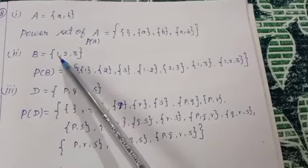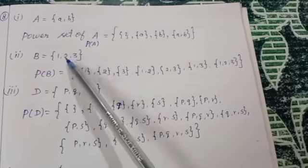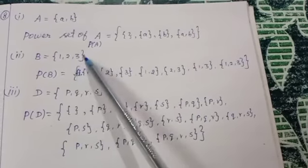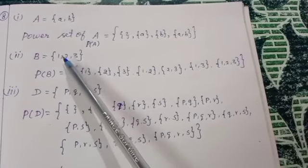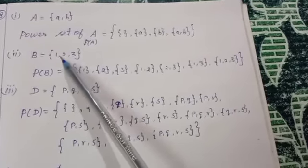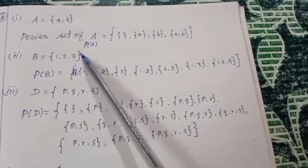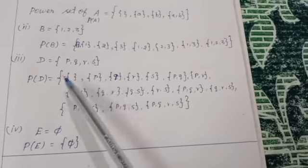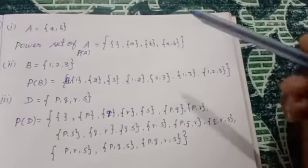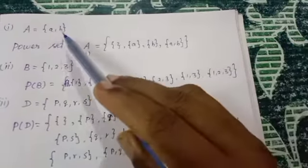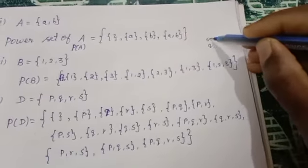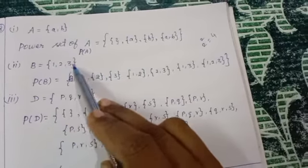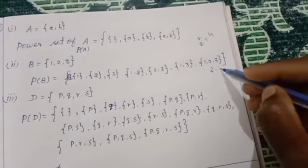Power set P(B) is equal to: first empty set, then single elements {1}, {2}, {3}, next double elements: {1,2}, {1,3}, {2,3}, then write all three together: {1,2,3}. The formula for number of subsets is 2^n. For 2 elements: 2² = 4. For 3 elements: 2³ = 8. So 8 subsets here.